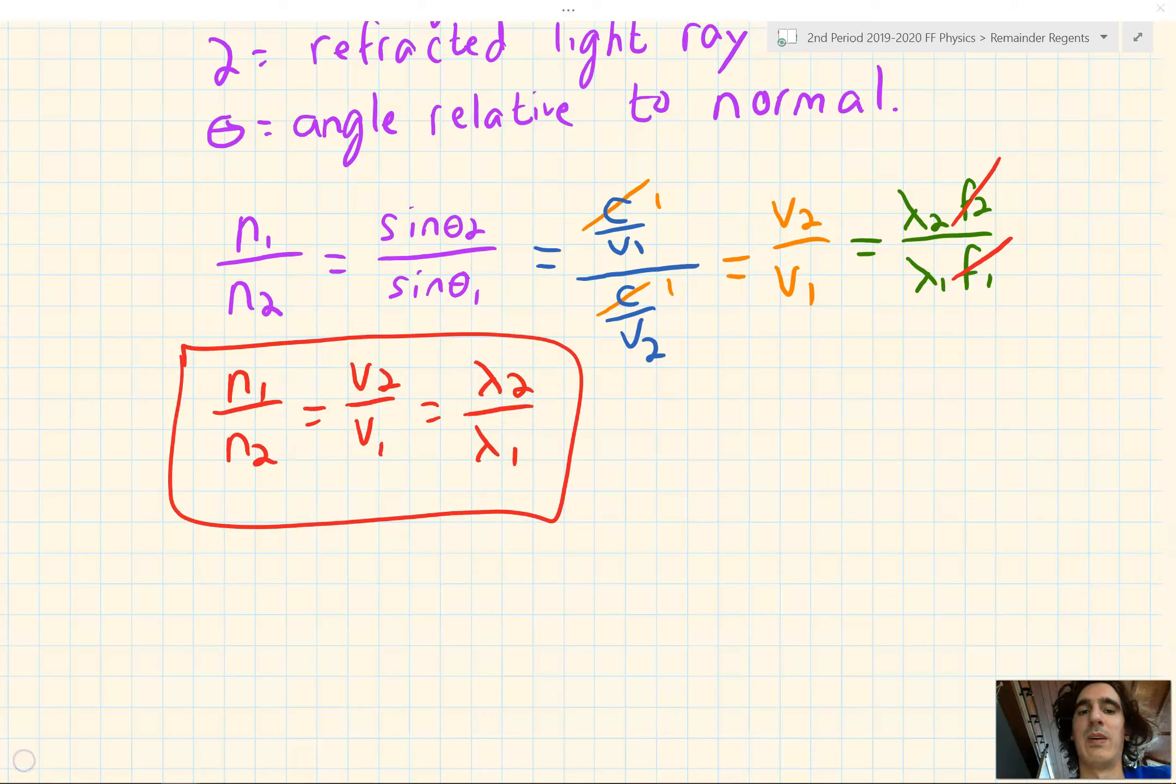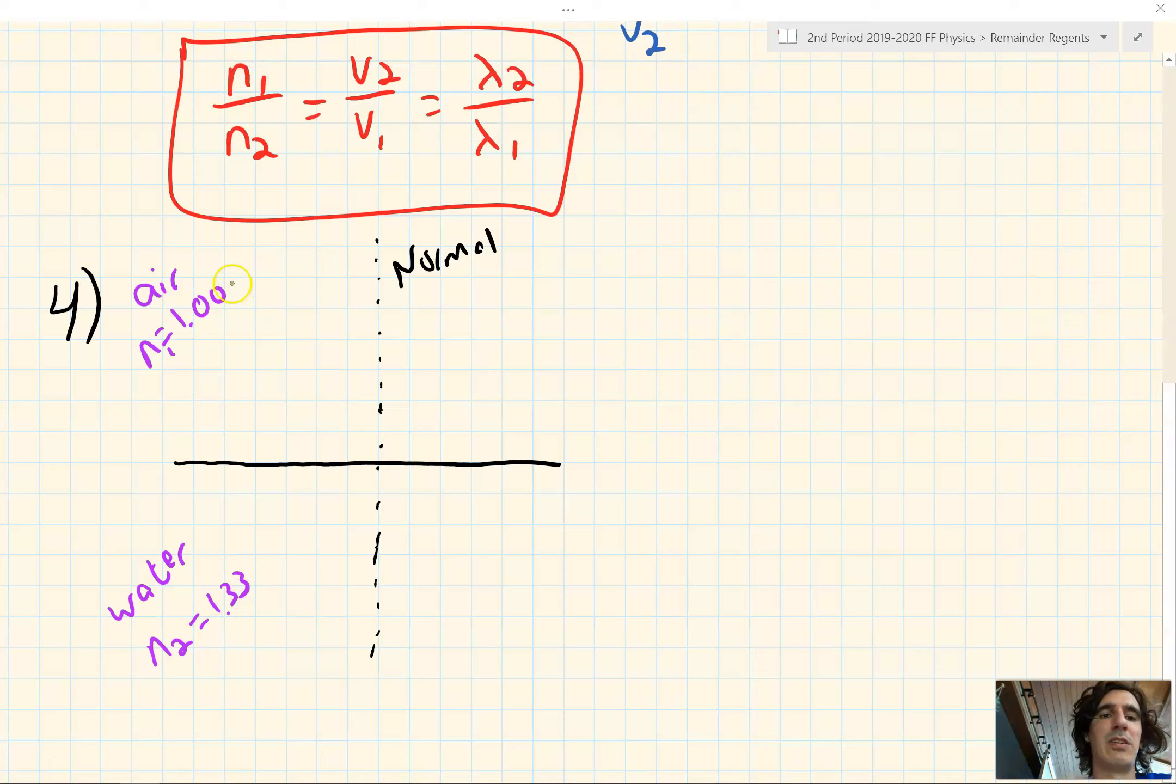So we'll draw our barrier, our normal perpendicular line, and we're going from air to water. So we'll look up the index of refraction for air, which is 1.00. That's in your reference table. We'll call that n₁, and it goes into water. And n₂ in our reference table is 1.33. And we're given that angle of incidence from air to water to be 30 degrees. So θ₁ is 30 degrees.